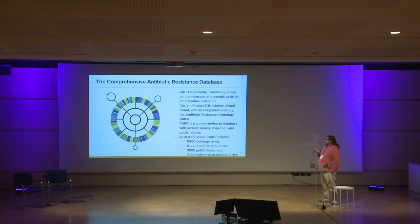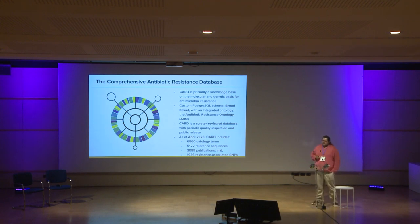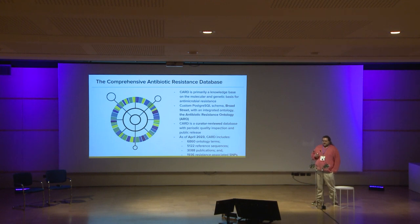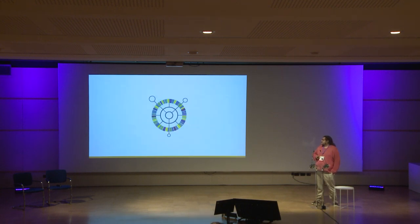The bulk of this talk is going to be focused on this database, which we call CARD for short. It's primarily a knowledge base on the molecular and genetic basis for antimicrobial resistance. The database is integrated directly with our ontology, which is the Antibiotic Resistance Ontology, or ARO, which is in the OBO Foundry. It's curator-reviewed, undergoes periodic public release, and has various quality checks. As of this month, it has just under 7,000 ontology terms, annotated by over 5,000 reference sequences and sourced from 3,000 publications.